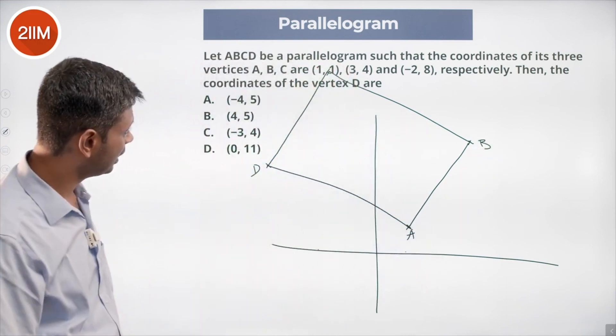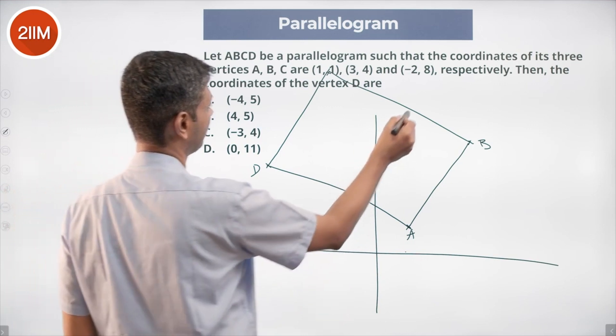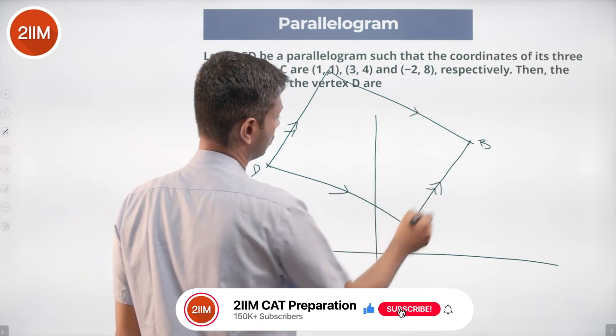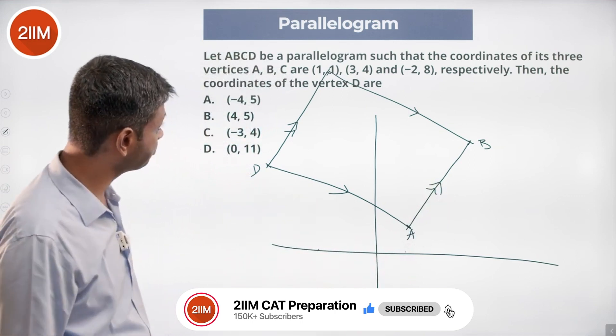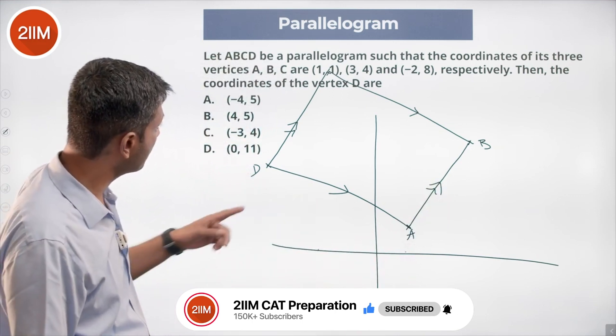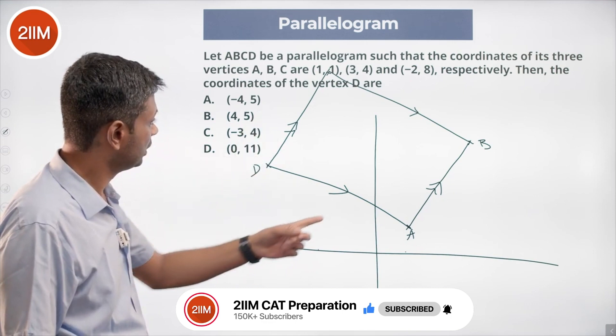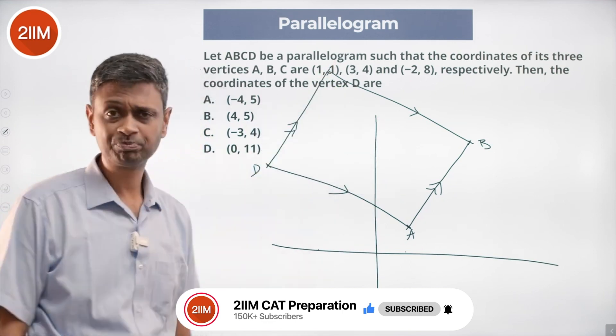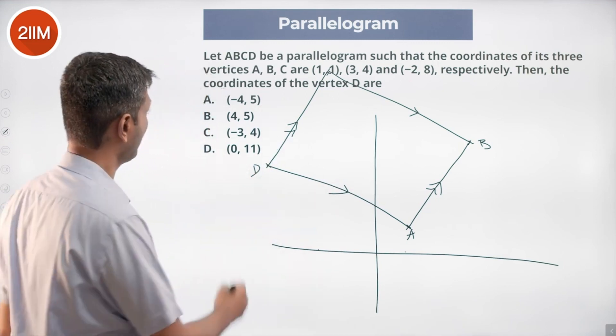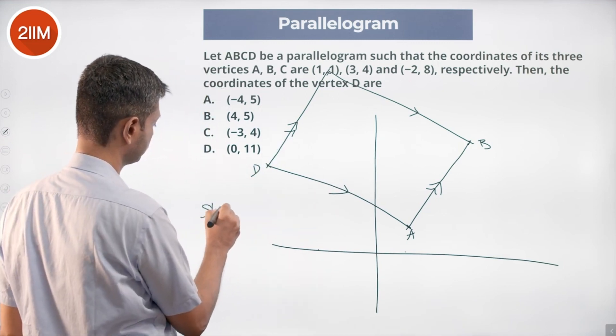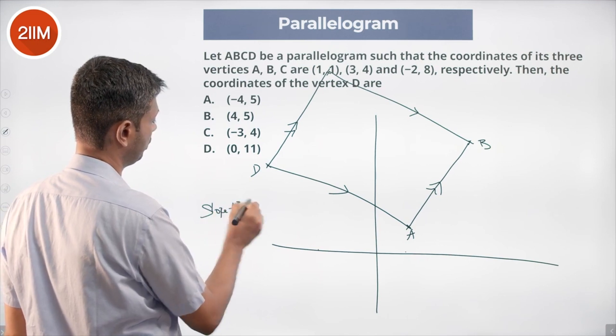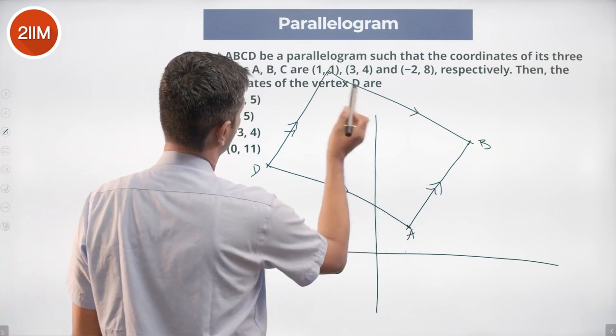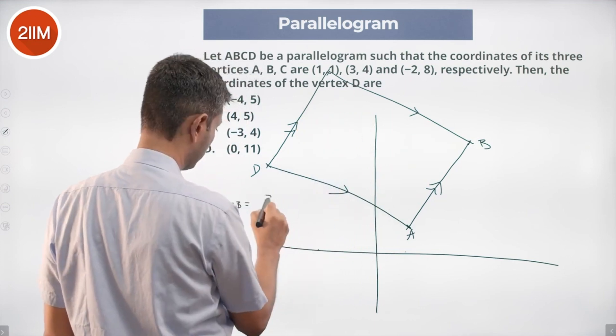How do we do this? We know these two lines are parallel. These two lines are parallel. So find slope of AB and BC. AB slope should be same as CD. BC slope should be same as AD. Let's find slope of AB: y2 minus y1 by x2 minus x1. 4 minus 1 by 3 minus 1, this is 3 by 2.